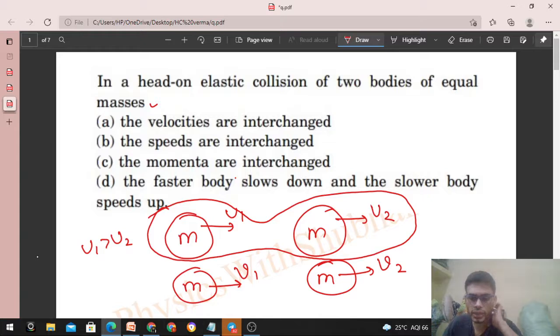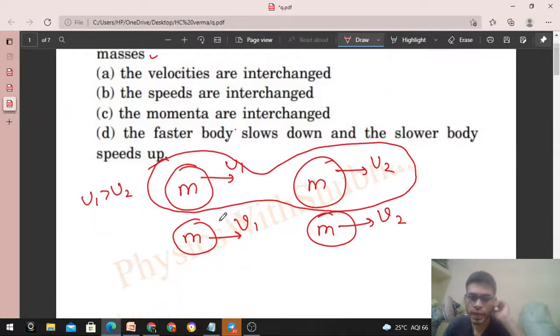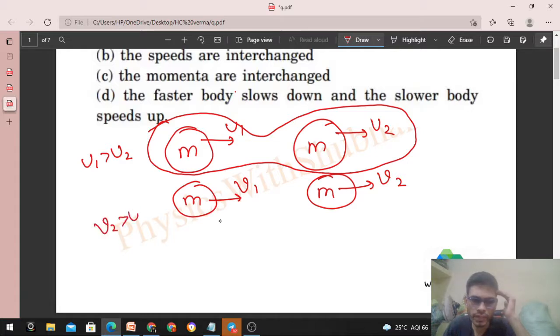Means the body behind, if its velocity is higher, then it will come and collide with the body ahead. After collision you can see that V2 should be greater than V1. Otherwise there will be repeated collisions between them. That is not the case.